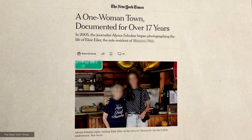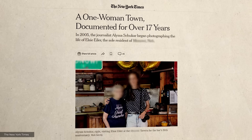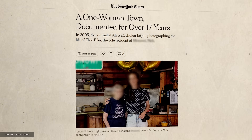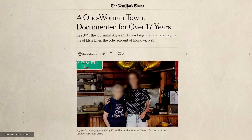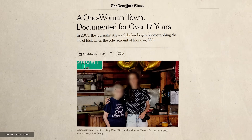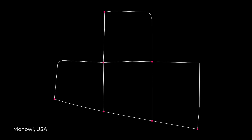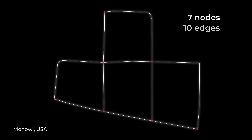I've got it. What about that tiny town in the US which famously has only one resident? Monowee, Nebraska. That's perfect. So Monowee has seven nodes. In a graph of a road network, nodes represent intersections or endpoints of roads.